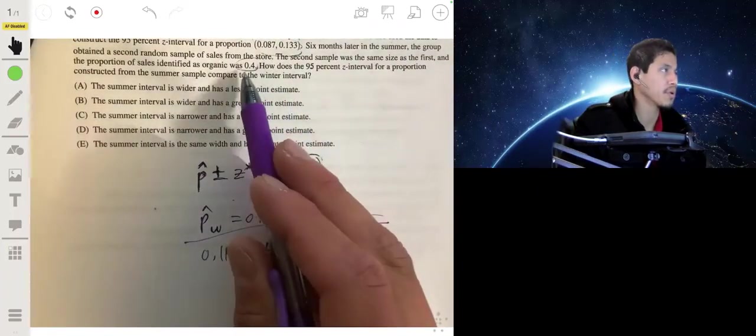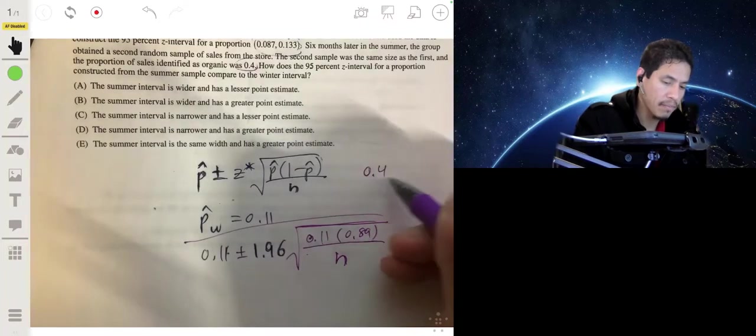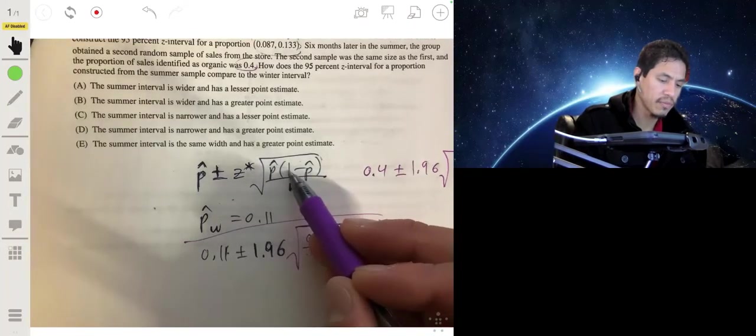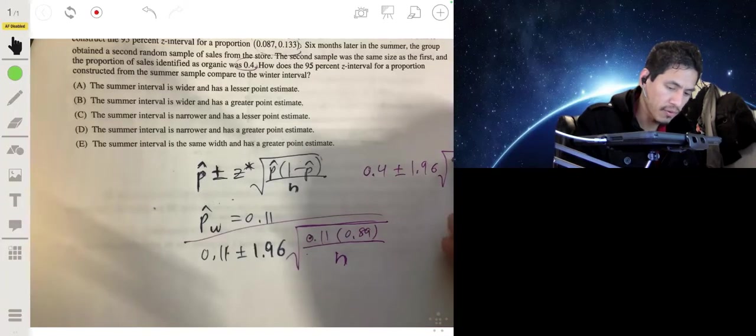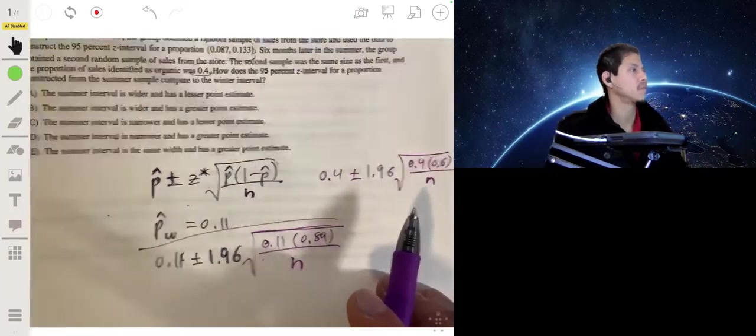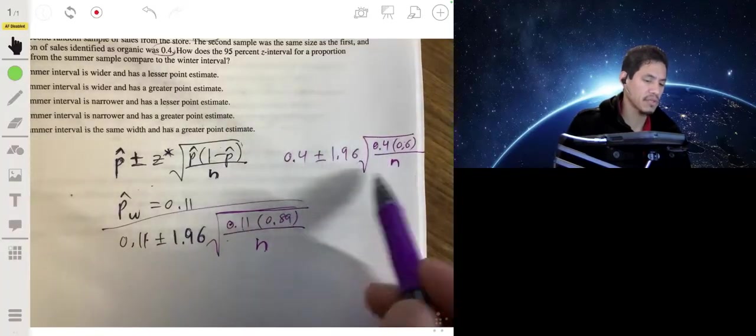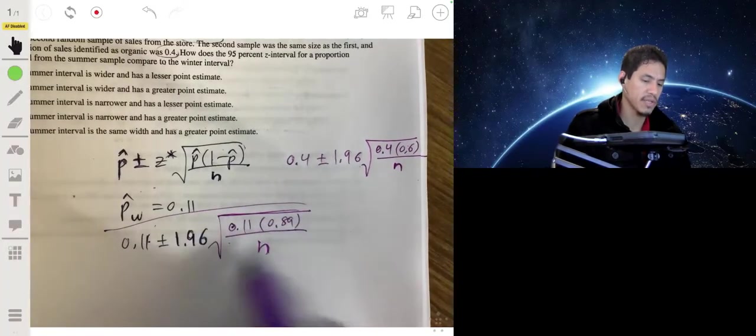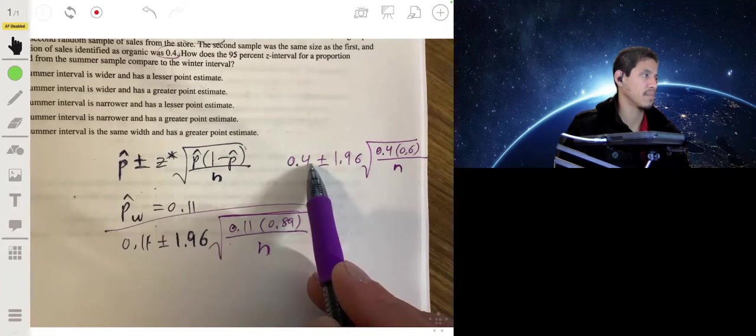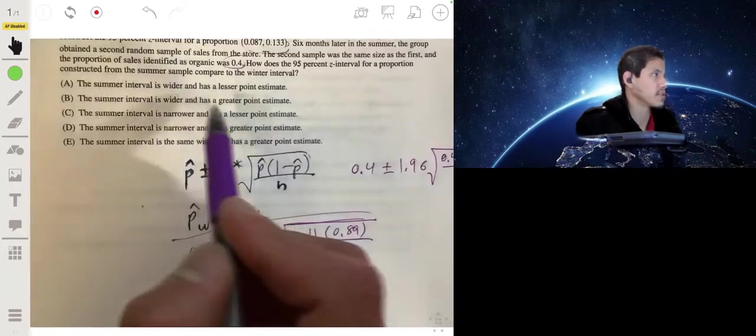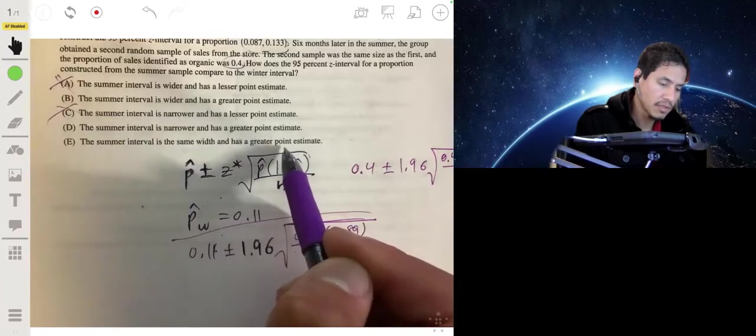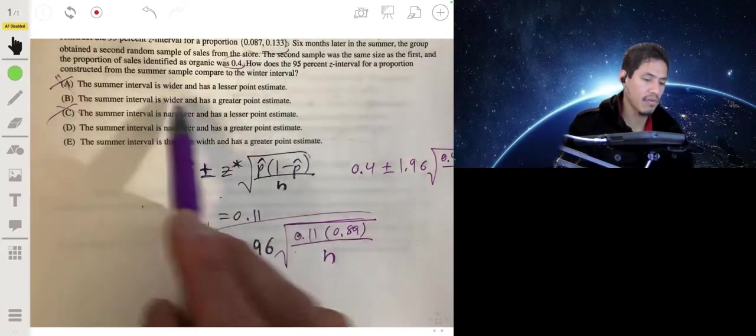The second sample, we would go and start at 0.4 plus minus 1.96 times the square root of 0.4 times 1 minus 0.4, so 0.4 times 0.6 over N. This is the winter sample, the first one. This is the second one. So we know first that the second interval has a higher point estimate. 0.4 is more than 0.11. So we know it's not going to be A because that says lesser point estimate. It's not going to be C. So it's B, D, or E. Let's look at how the intervals compare.